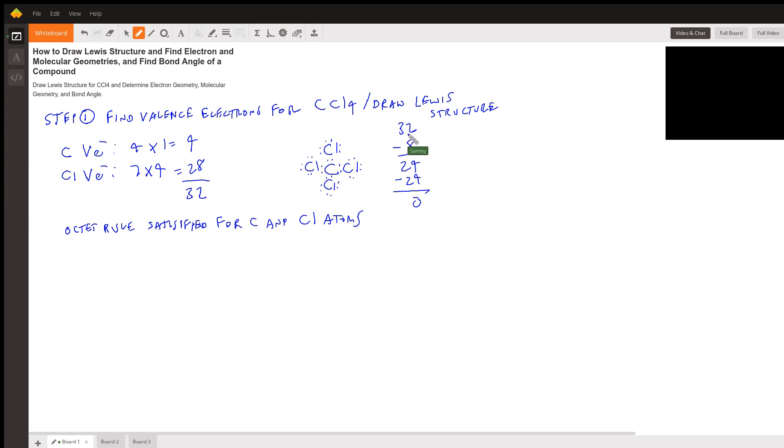So we have a total of 32. We used up eight for the single bonds, so we have 24 electrons left over. We have four chlorines. Each chlorine can take six more electrons, and so six times four is 24. So we've used up all the electrons. You can see that each chlorine has six electrons.